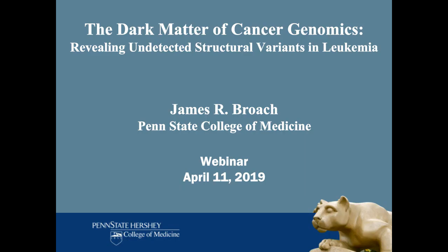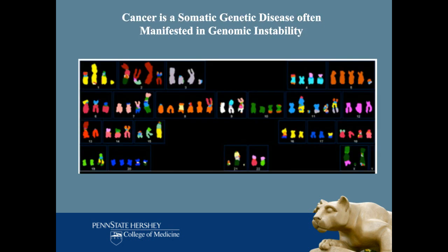Dr. Broach thanks Christy and introduces the topic: identifying structural variations in cancer. As a prelude, cancer is a somatic genetic disease that often manifests with extreme genomic instability. In extreme cases, there are massive numbers of genome rearrangements, as identified by karyotype and chromosome painting, which led to the search for methods to exhaustively identify structural rearrangements associated with cancer.